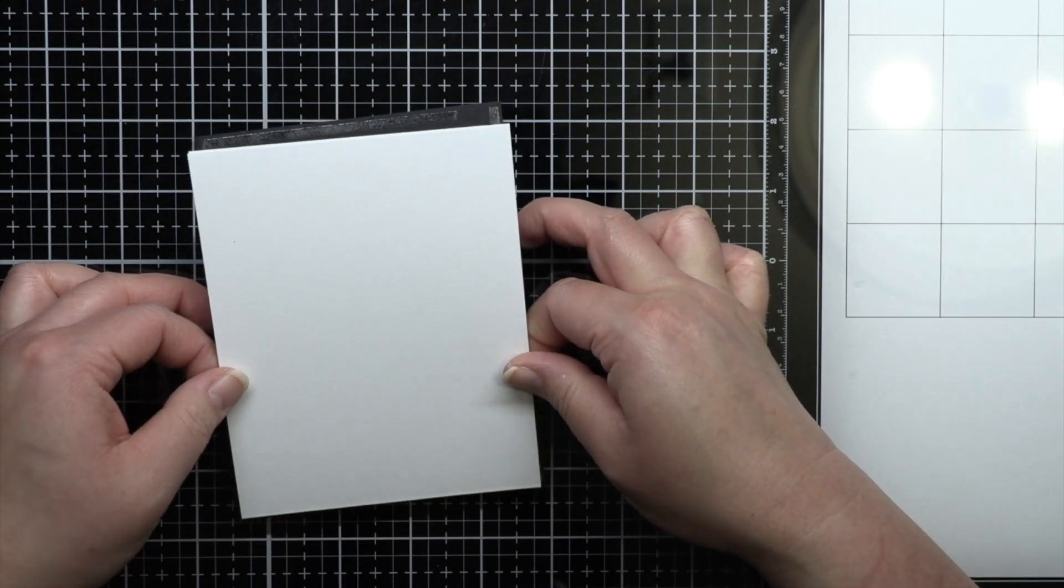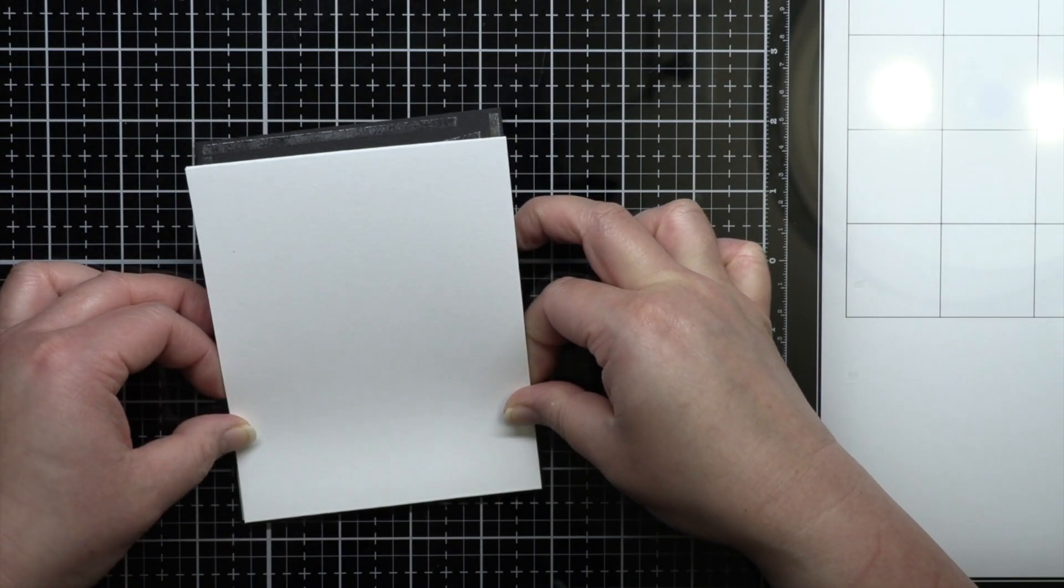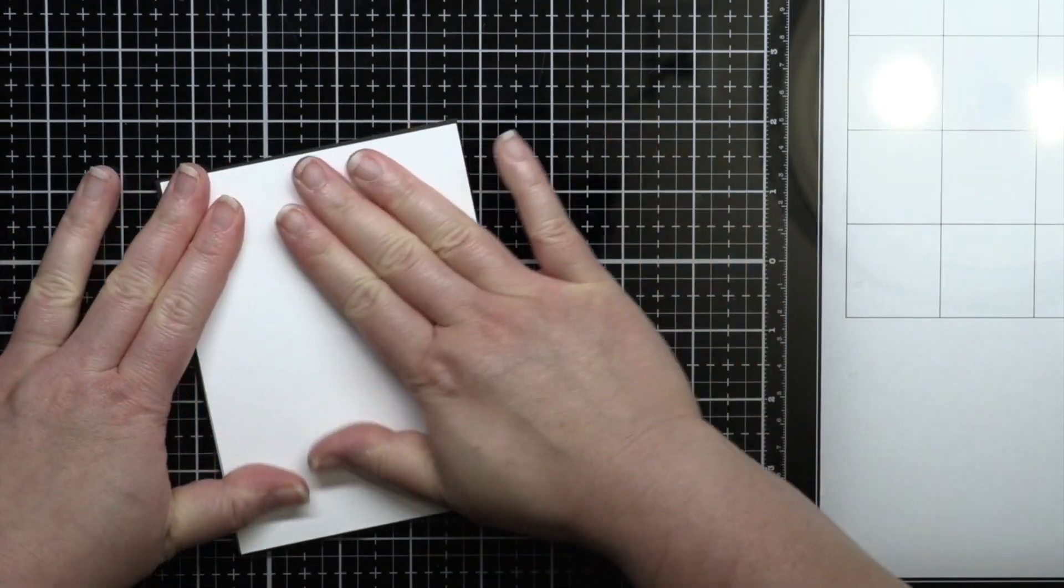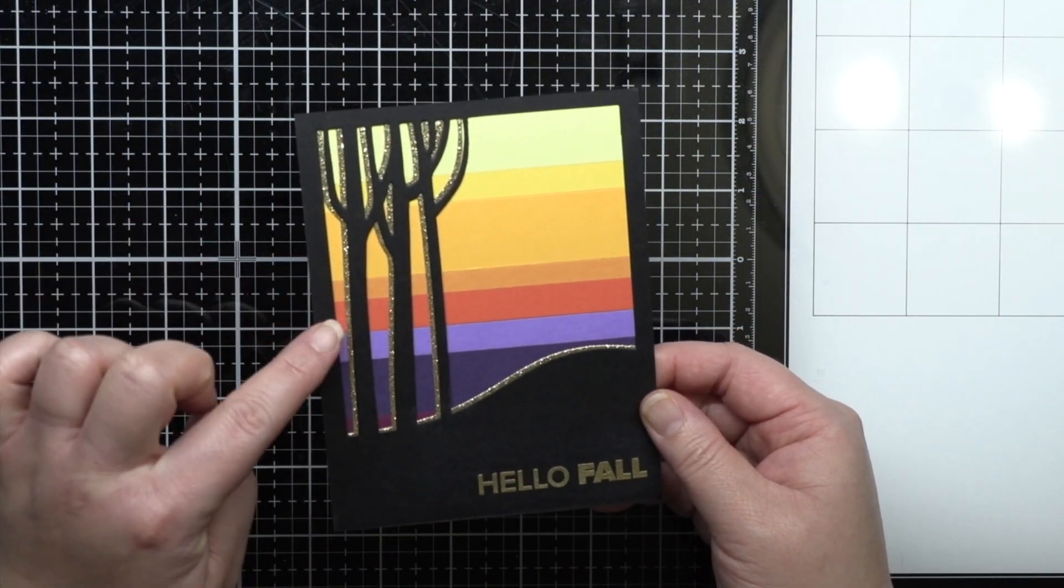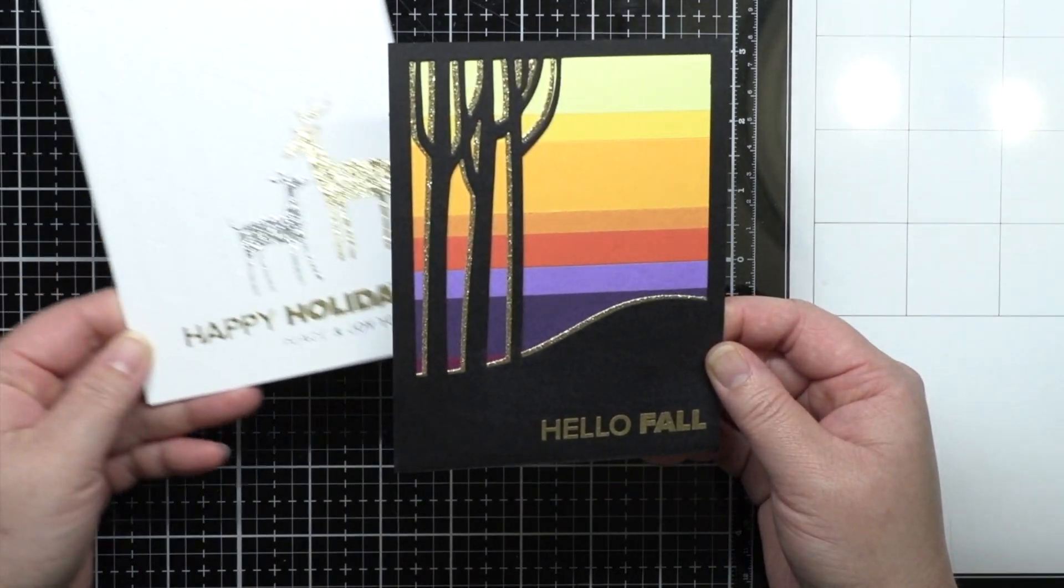Finally, I adhere that to my striped card base to finish the card. I love how it looks like a very modern ombre sunset. And you can use the same trick of adding a second layer of glitter cardstock to my first Christmas card for a little extra sparkle if you'd like.